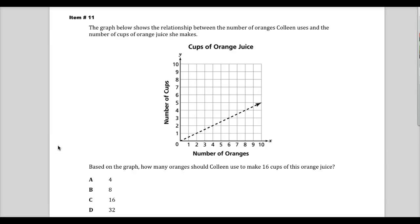Welcome. This is item number 11 from the 2014 test item release for the 7th grade TCAP math. The question says, the graph below shows the relationship between the number of oranges Colleen uses and the number of cups of orange juice she makes.